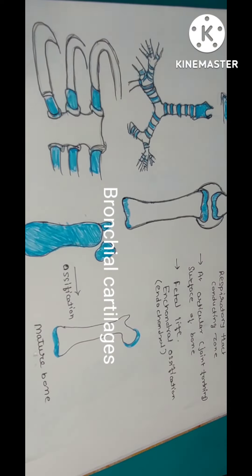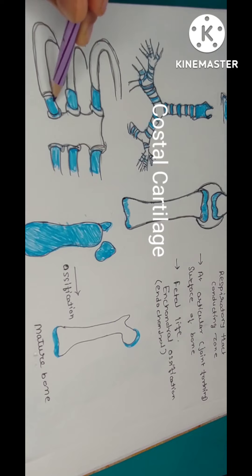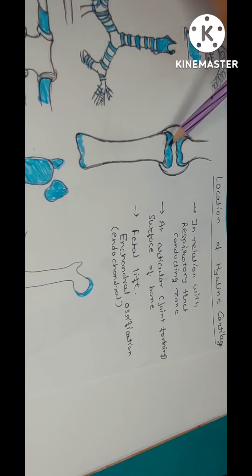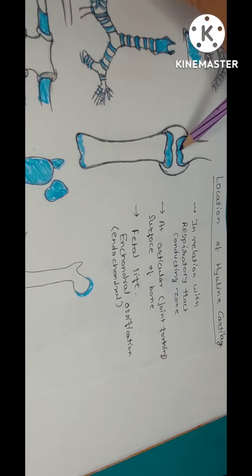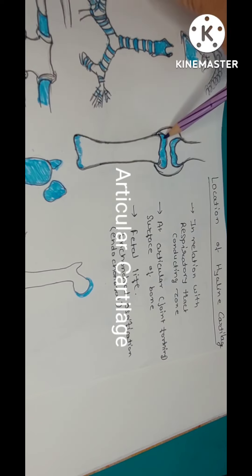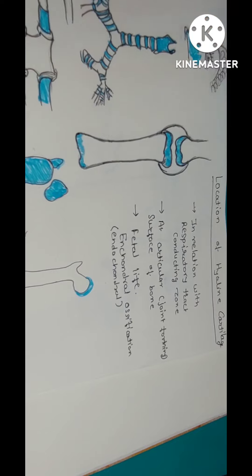At the anterior end of the rib, you can see the costal cartilage — it is also a variety of hyaline cartilage. Then at the end of the bone, on the epiphysis, the epiphyseal plate of cartilage — the joint-forming surfaces, that is articular surfaces of the bones, are covered by the articular cartilage, which is also a variety of hyaline cartilage.